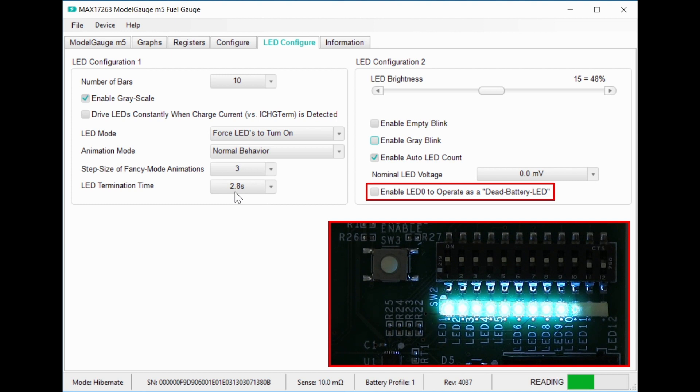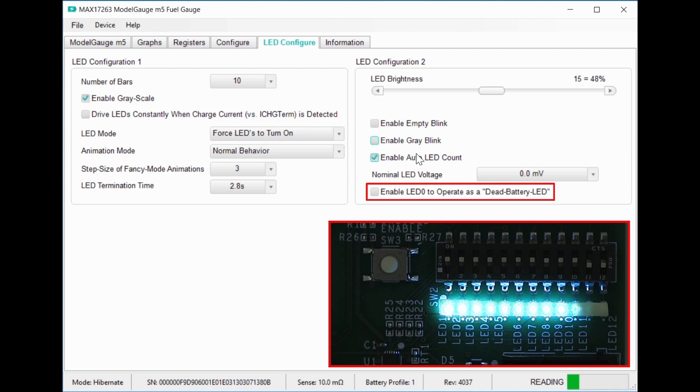The last feature here is the empty LED. This is typically a different color and lights up when the indicator reaches 0 bars.